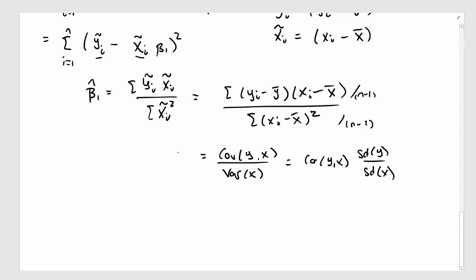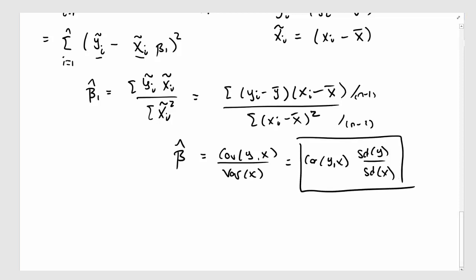So my beta 1 hat has to be this, the formula that we gave. Then my beta naught hat is given above as y bar minus beta 1 hat x bar.